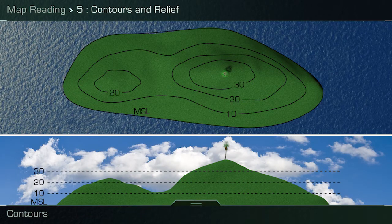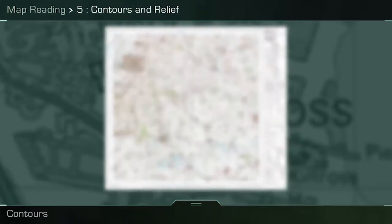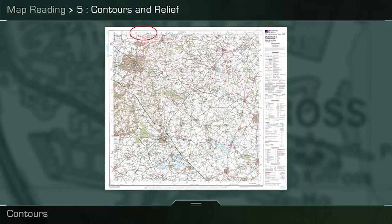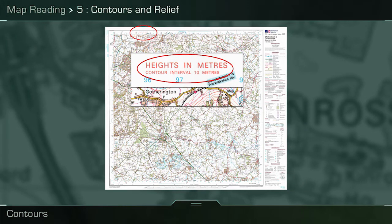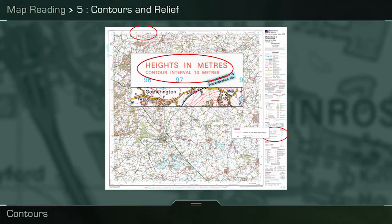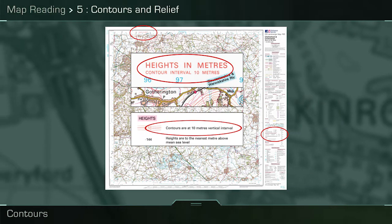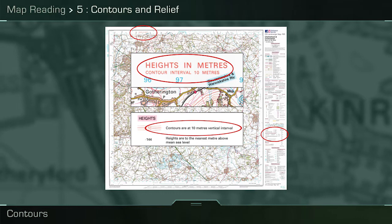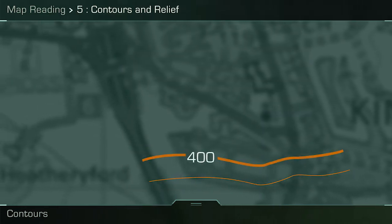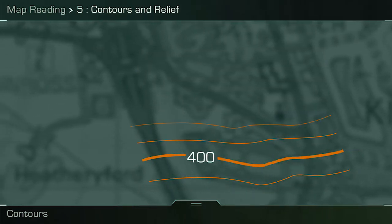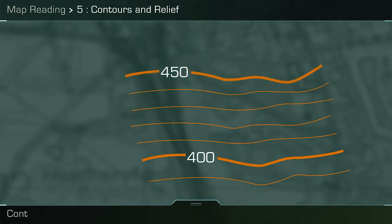The distance in height between each line can be found as the vertical interval in the margin. Although all contours are numbered, every 5 contour lines you will find an index contour which will be a thicker brown line. This will read the height above sea level and, used in conjunction with the vertical interval, will allow you to work out the remaining heights.